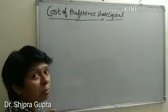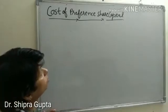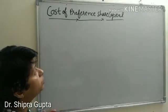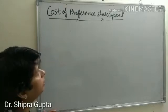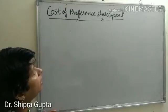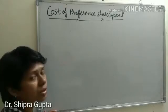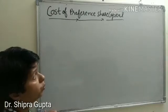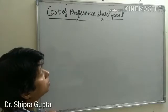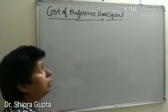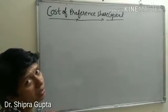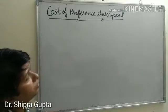We know the meaning of cost of capital. Today I will teach you cost of preference share capital. We can divide it into two parts: cost of preference share capital by the method of irredeemable, and in the case of redeemable.